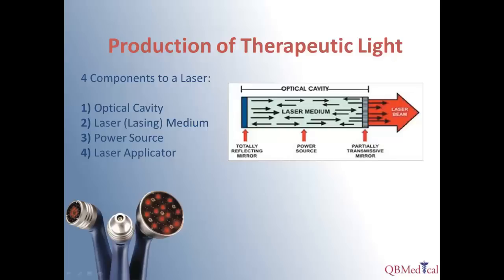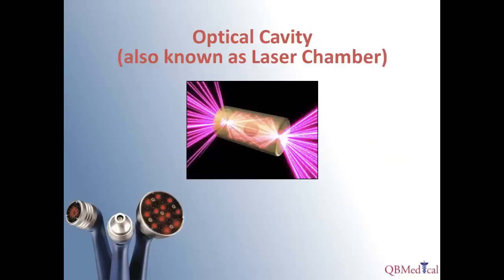There are four basic components to any laser: the optical cavity or lasing chamber, the active lasing medium, the power source, and the applicator to direct the laser beam. Here we have a picture of the optical cavity, also called the lasing chamber, where the amplification actually occurs.